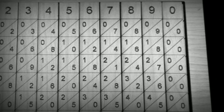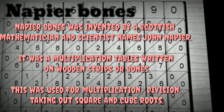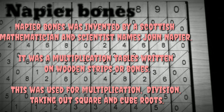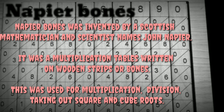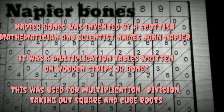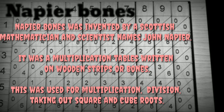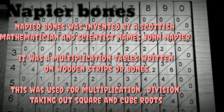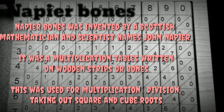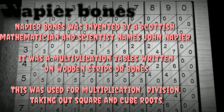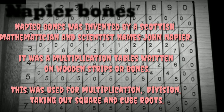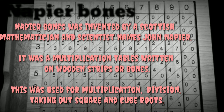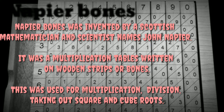Now next is Napier Bones. Napier Bones was invented by a Scottish mathematician and scientist named John Napier. It was a multiplication table written on wooden strips or bones. This was used for multiplication, division, and taking out square and cube roots.